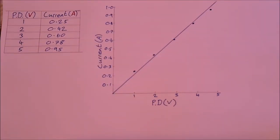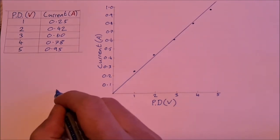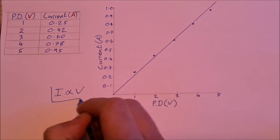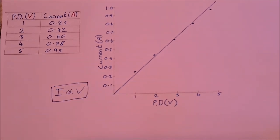And this shows us that current is directly proportional to the potential difference. So I is proportional to V, and this is Ohm's Law. This verifies Ohm's Law.